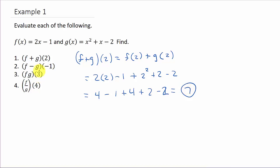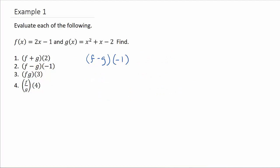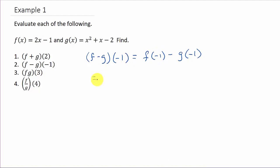Let's look at the next one: f minus g of negative 1. So this is going to give us f of negative 1 minus g of negative 1. We're going to take the negative 1 and plug it in for x. So that's 2 times negative 1, minus 1. Then we take the negative 1 and plug it in for x in g. So that's minus negative 1 squared, plus negative 1, minus 2.